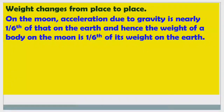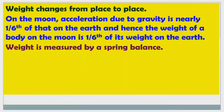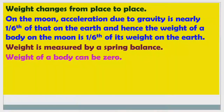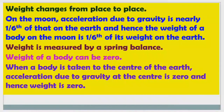For example, if the weight of a body on the earth is 60 kilograms, then it will be 1/6 × 60 = 10 kilograms on the moon. Weight is measured by a spring balance. Weight of a body can be zero — if acceleration due to gravity is zero, then weight becomes zero. When a body is taken to the center of the earth, acceleration due to gravity is 0, so its weight will be 0.